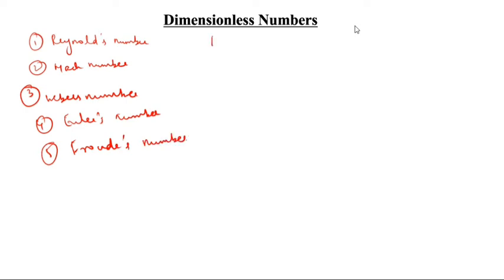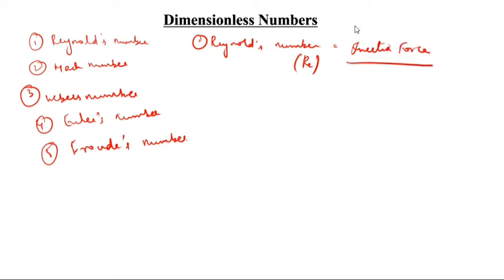First, we will see Reynolds number. What is the formula of Reynolds number? The short form is Re. Reynolds number is inertia force divided by viscous force. Inertia force we denote as Fi, viscous force denoted as Fv.